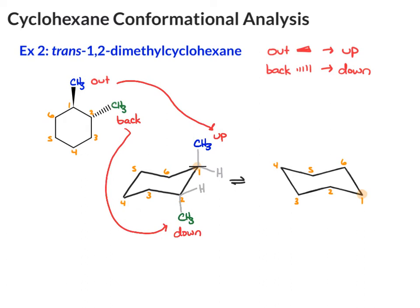Check your work. If you look at your original structure, we talked about cis and trans relationships. These two groups are trans — they're on opposite sides. Even on the chair, if you think about the planes of the carbons, one CH3 group is up, one is down — it's still trans. And you need that to be the case for it to be correct.